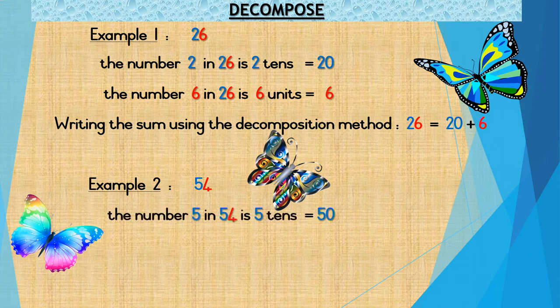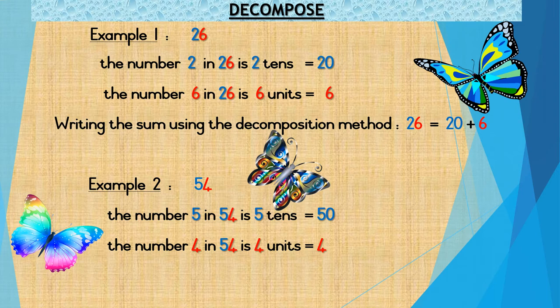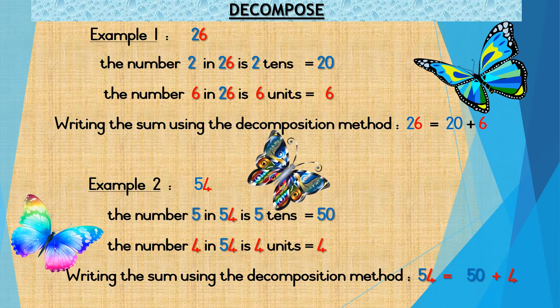The number 5 in 54 is 5 tens which is equal to 50. The number 4 in 54 is 4 units which is equal to 4. Writing the sum using the decomposition method, 54 is equal to 50 plus 4.